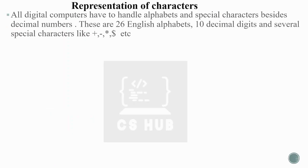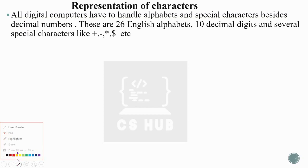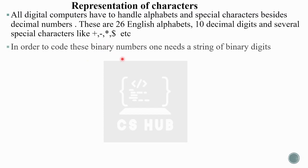Representation of characters: all digital computers have to handle alphabets and special characters besides decimal numbers. Consider our keyboard — it has alphabet keys, numeric keys, and special keys. Computers have to handle alphabets, special characters, and numbers. There are 26 English alphabets, 10 decimal digits, and several special characters like plus, minus, star, and dollar.